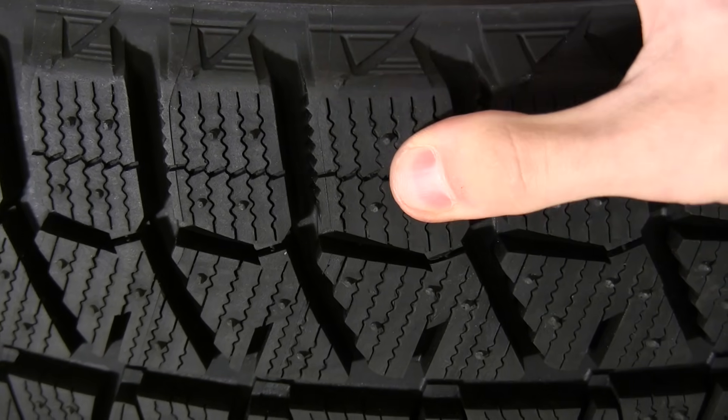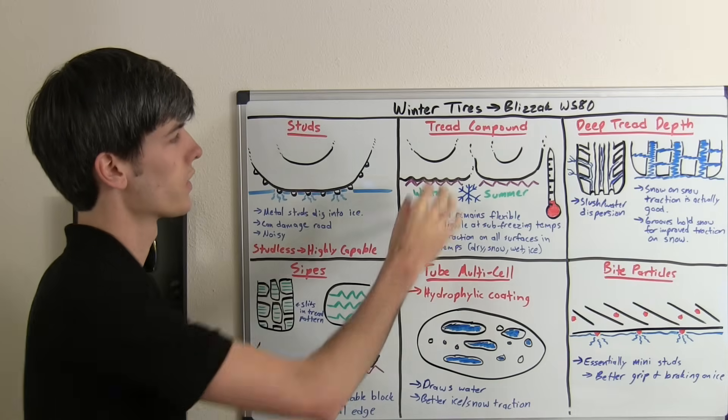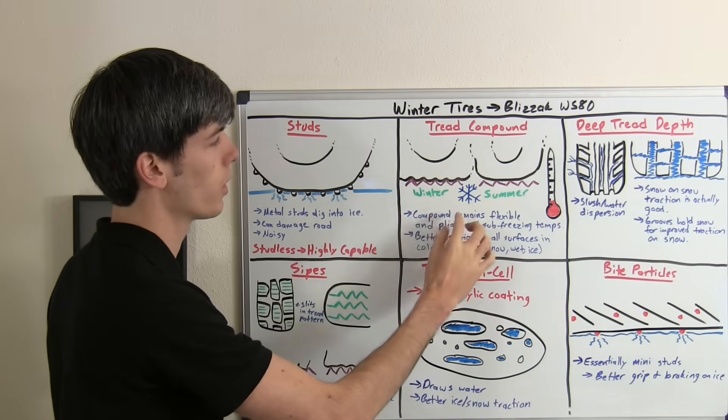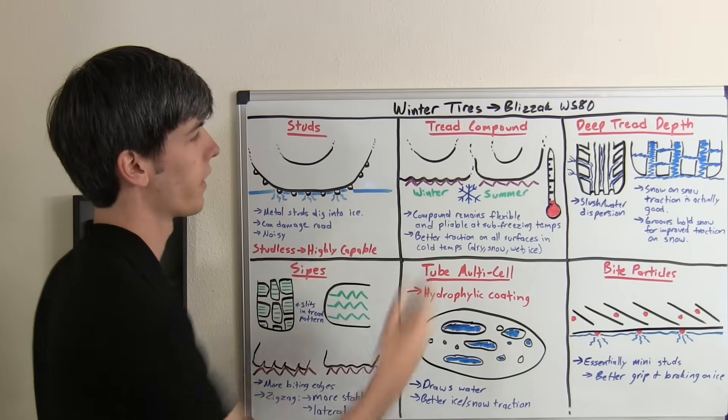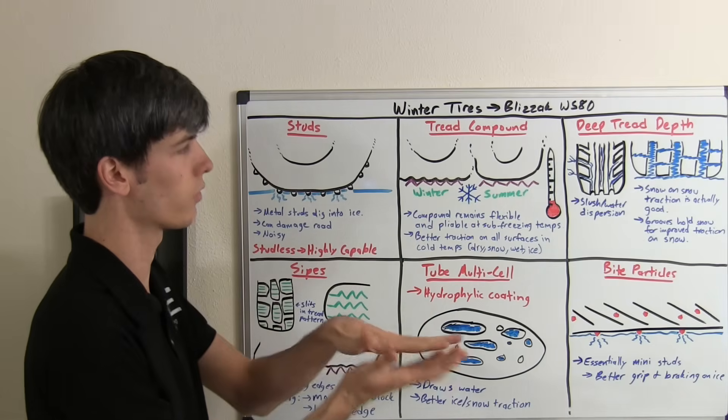Not only in icy and snowy conditions, but also on dry roads, as the tire can deform into the contours of the road and mesh with the grooves better than a summer tire would that's much harder and kind of rests on top.